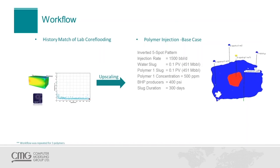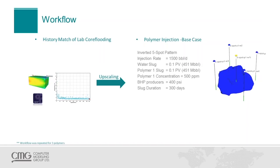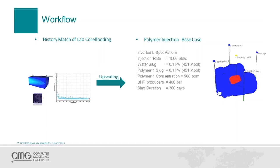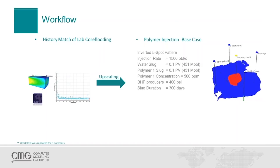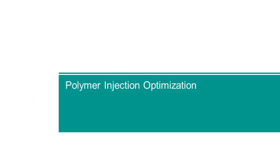In our case, the field implementation uses inverted five-spot patterns — the injector in the middle and four producers around it. The first run uses an injection rate of 1,500 barrels per day, a water and polymer slug size of 0.1 pore volume, a polymer concentration of 500 ppm, a bottom hole pressure of the producers at 400 psi, and a slug duration of 300 days. This is our first run, and then we start the optimization with CMOST.